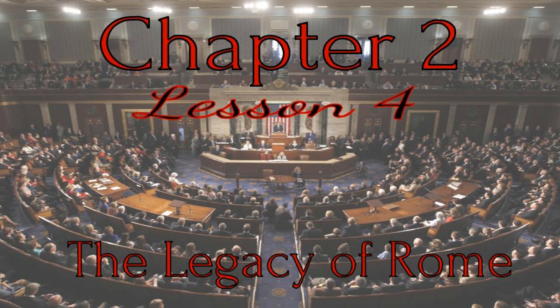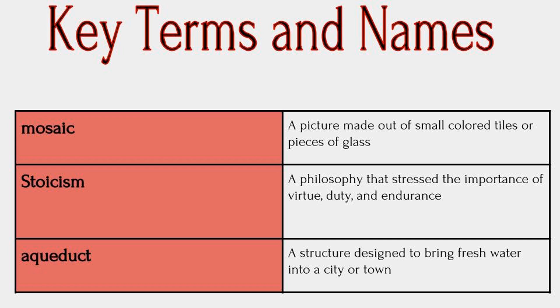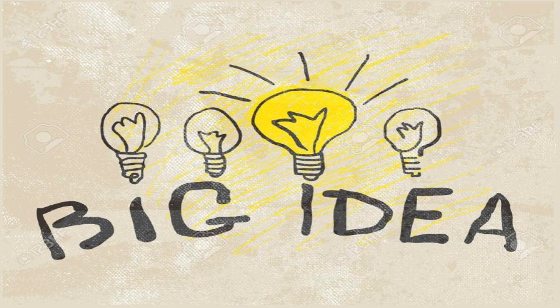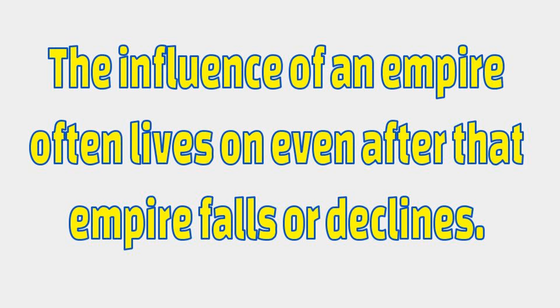In the last section, we learned about the achievements of the Romans in the arts, law, engineering, and government. In this lesson, you're going to be talking about the lasting achievements of the Roman Empire. The first term you need to know is mosaic, the second is stoicism, and the third is aqueduct. The big idea for the whole unit: the influence of an empire often lives on even after that empire falls or declines — we're going to find out even a little bit more about that in this particular lesson.